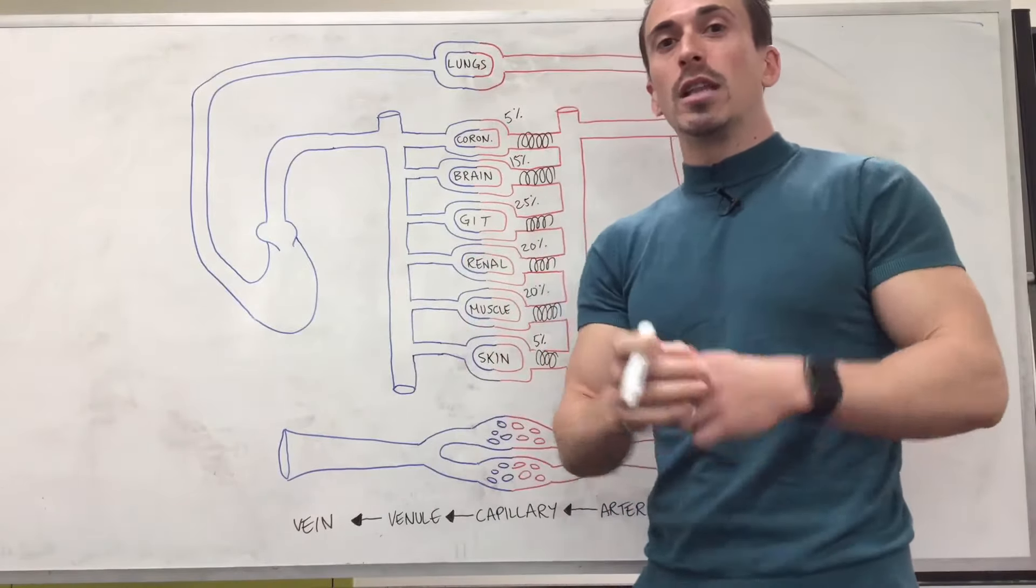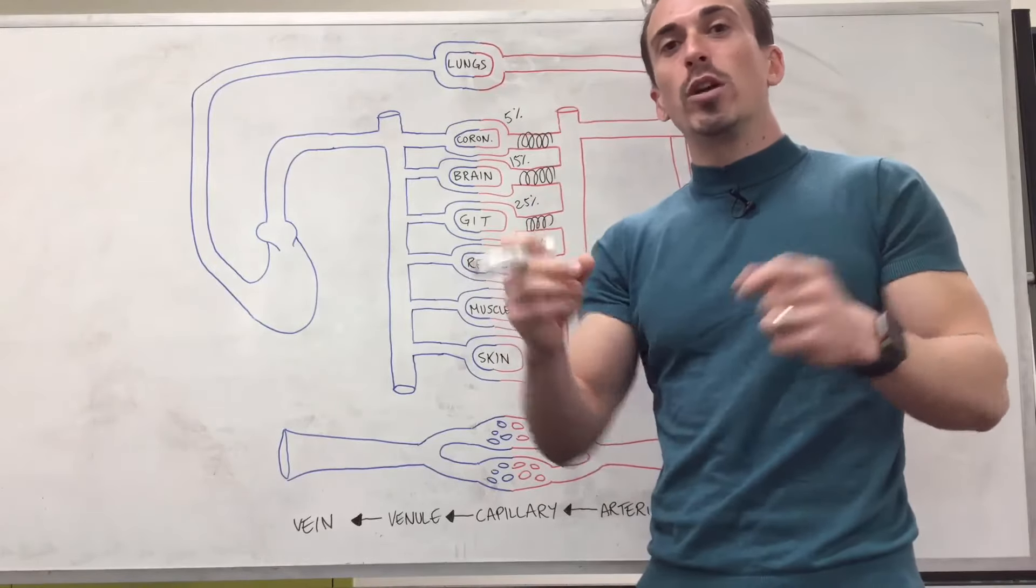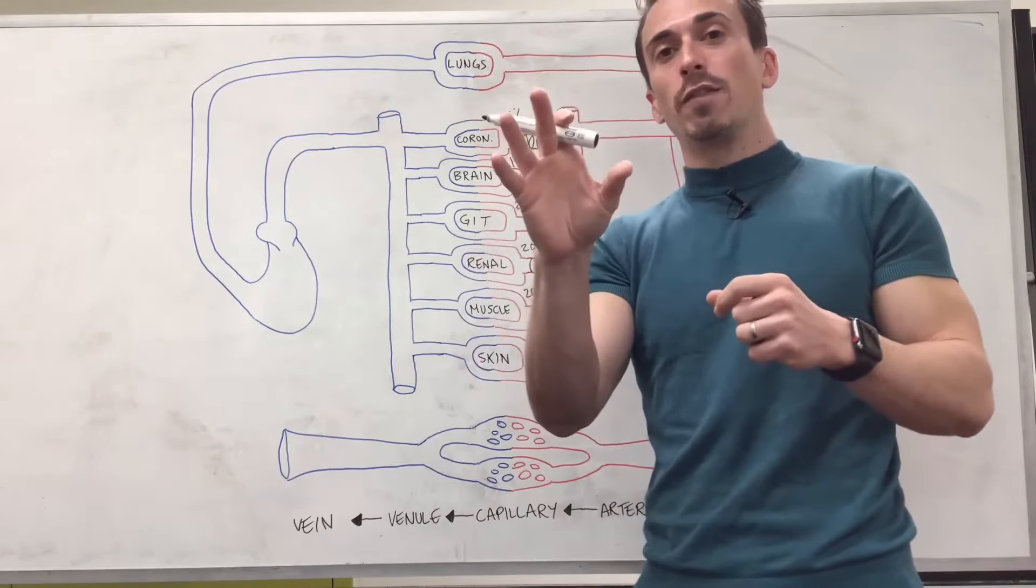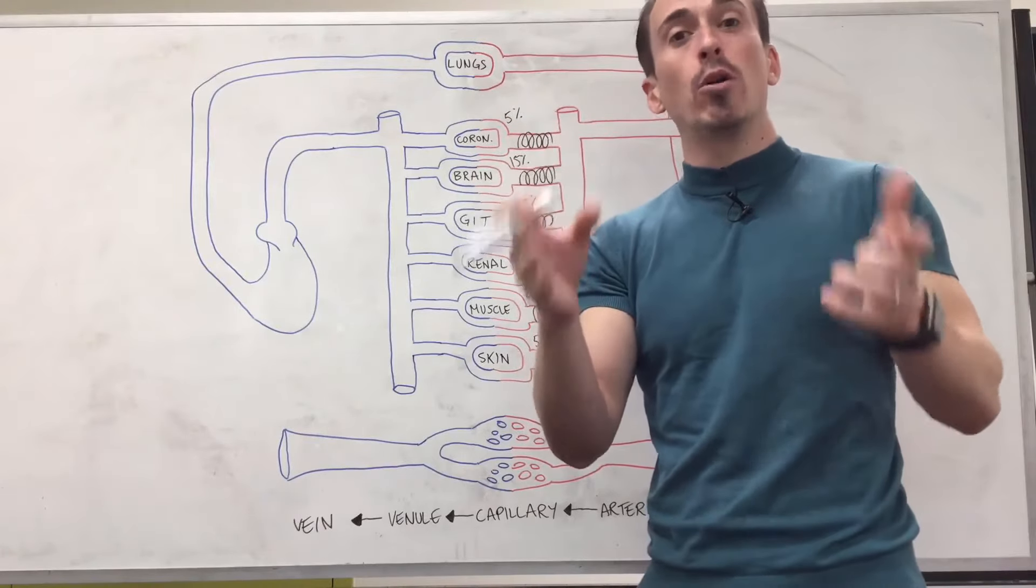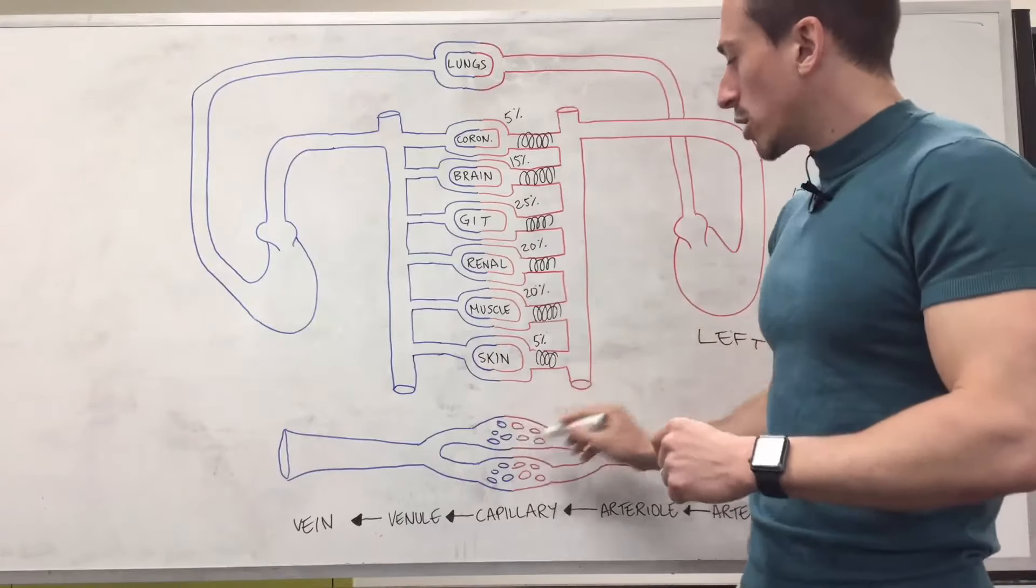So for example you can have these sinusoidal capillary beds and they are located in areas where you need mass exodus of fluids, proteins, cells. This can happen in the bone marrow for example, they're sinusoidal.